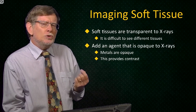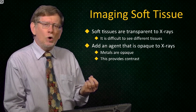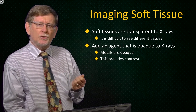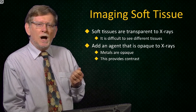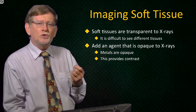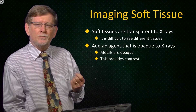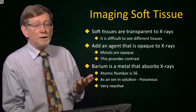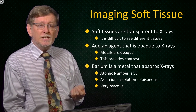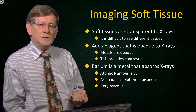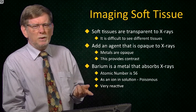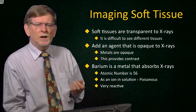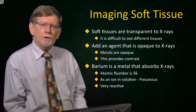If we could introduce something dense, this will absorb the x-rays. Metals are dense, and so opaque to x-rays, and so they can be used to add contrast to the image. Barium is one such metal. It has an atomic mass of 56, and so is very dense compared to tissue. However, the problem is that barium ions in solution are highly toxic and very reactive.